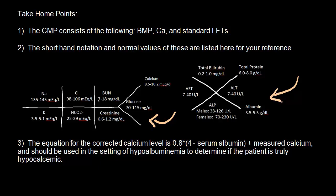And lastly, the equation for the corrected calcium level is 0.8 times 4, which is what you're assuming is normal serum albumin, minus your serum albumin plus the measured calcium, and should be used in the setting of hypoalbuminemia to determine if the patient is truly hypocalcemic. Thanks for watching.